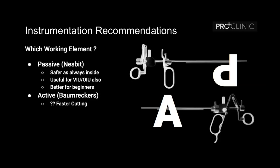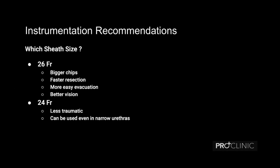In the passive working element, you deploy the loop and the cutting happens passively by the spring action — you just leave it and slowly it comes back cutting the tissue. In the active type, you use your fingers to actively cut the prostatic tissue. Which sheet size is recommended? It's a personal opinion, but less traumatic things are better; the problem is that smaller sheets give smaller chips and slower resection. Many people prefer the 26 French standard outer sheet — there are bigger chips, faster resection, easier to activate, and better vision.